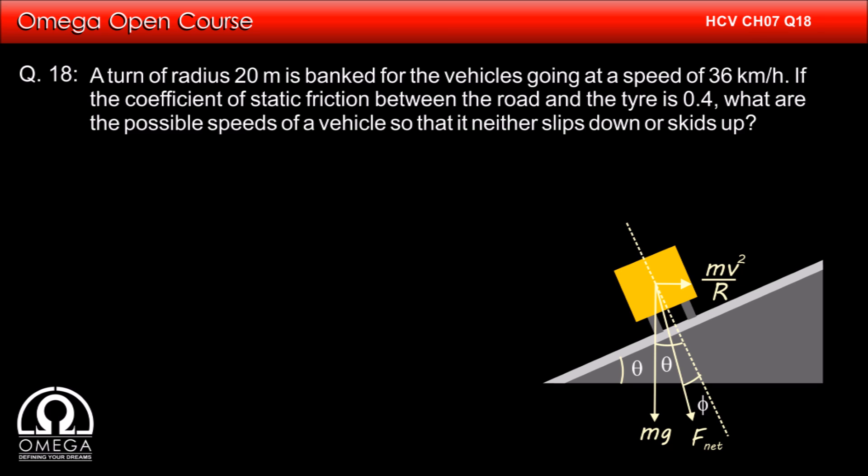Let tan inverse mu be phi. So, in limiting case, F net makes an angle phi with the normal, which means F net makes an angle theta minus phi with mg.